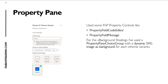For the property pane, I used some PnP property controls, like the PropertyFieldCodeEditor, to manage the JSON part of the theme if you select the theme type 'custom'. For the selection of the background shading, I used the PropertyPaneChoiceGroup with a way to dynamically generate an SVG image as a background to highlight the different backgrounds for each variation. I also used the PropertyPaneFieldMessage control to show an info message to the user, reminding them to use the Theme Designer to generate the theme when selecting the custom theme type.